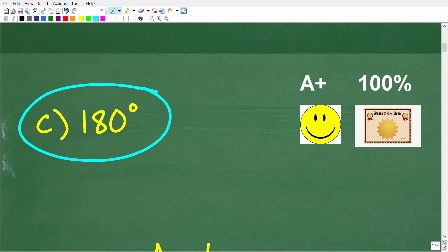Now if you got this right, you definitely get a happy face, an A plus, a 100 percent, and a certificate of excellence in your knowledge about lines in geometry. So good job, but a lot of you out there may still be confused on why the answer is 180 degrees. So let's go ahead and get into why that is the case right now.